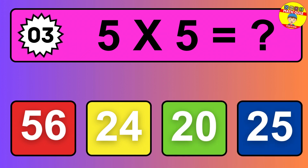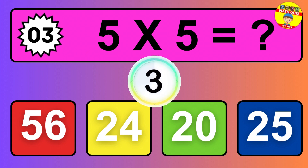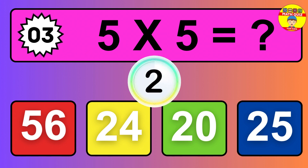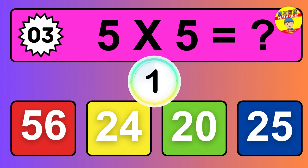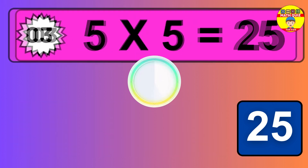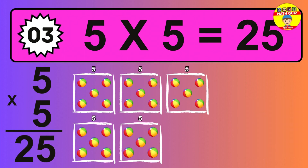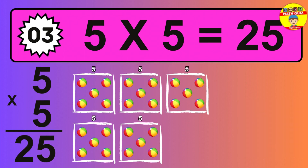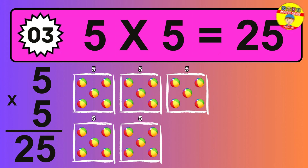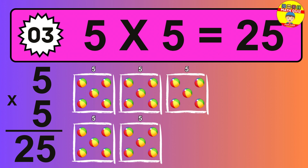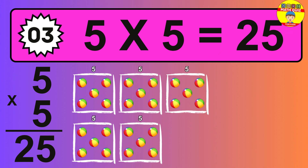Question three. Five times five equals what? So the answer is five times five is 25. To calculate, we have five groups with five balls each one. So how many balls do we have? 25 balls.